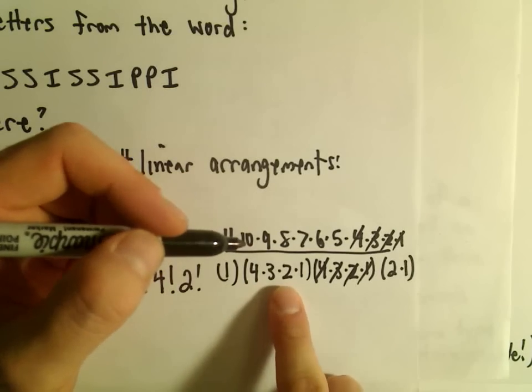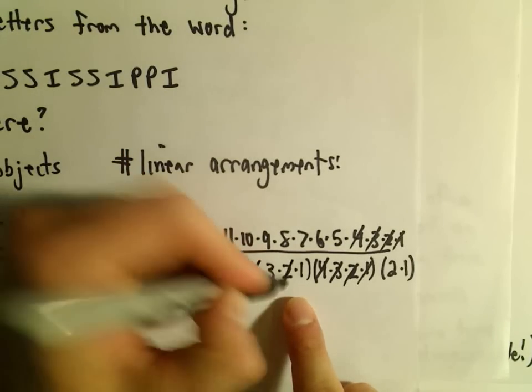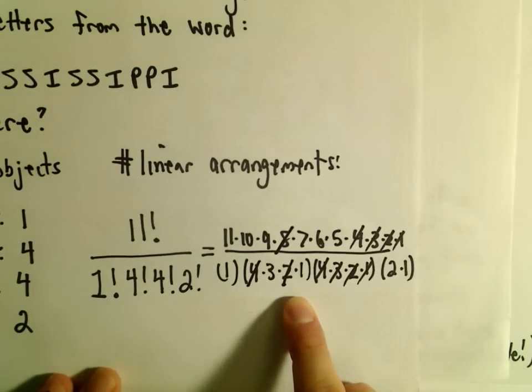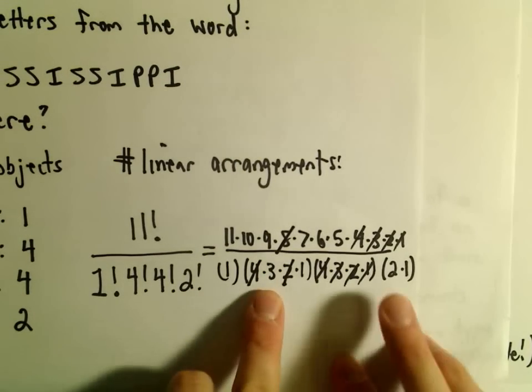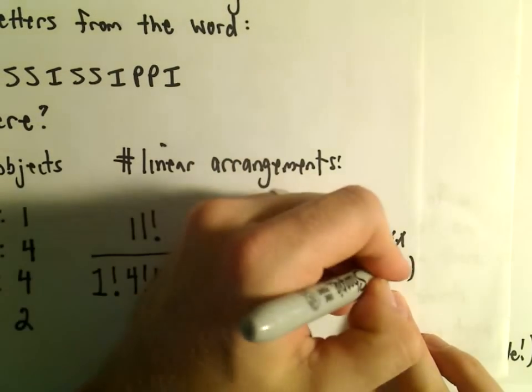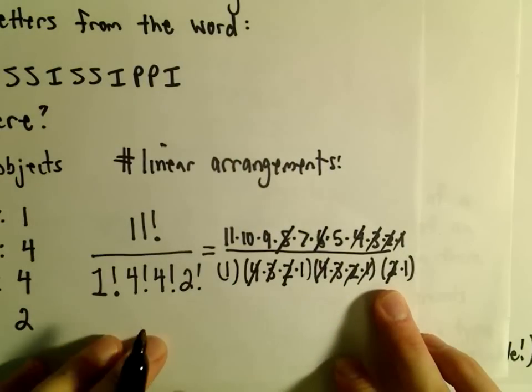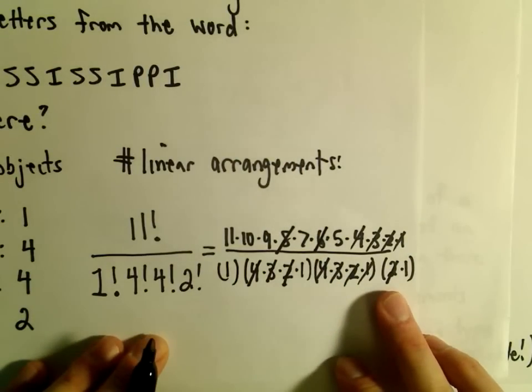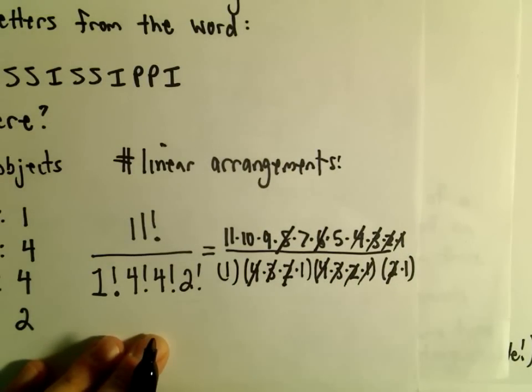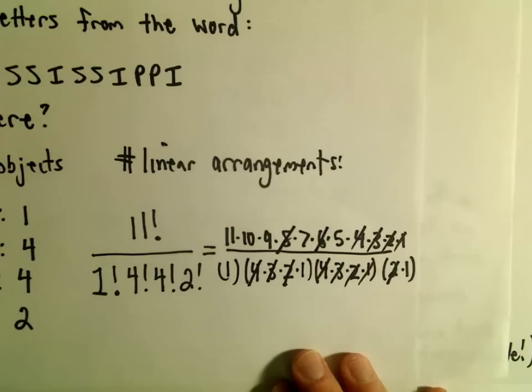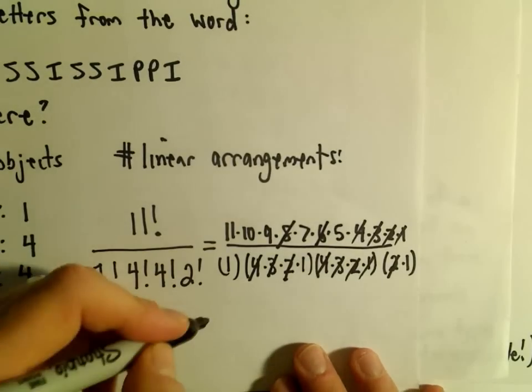We've got 4 times 2, 4 times 2 would be 8, so we can cancel the 8 out in the numerator. 3 times 2 would be 6, so we can also cancel the 6 out of the numerator. I don't think anything else is canceling.